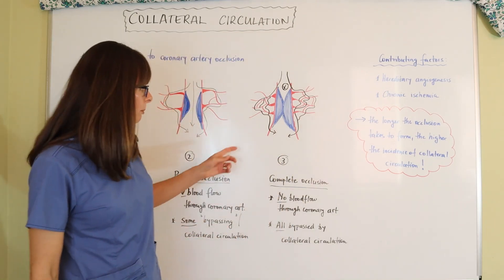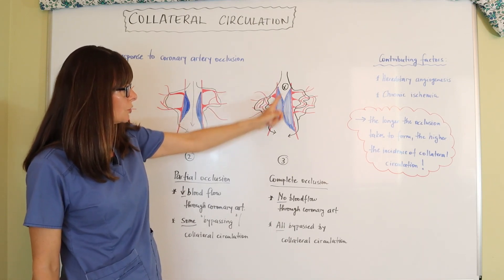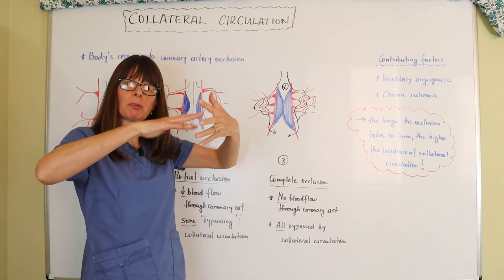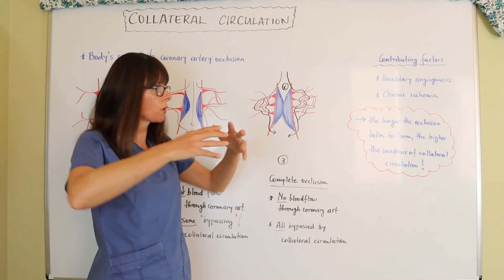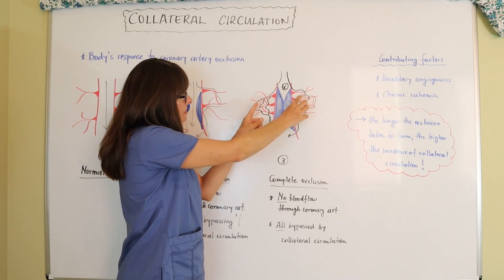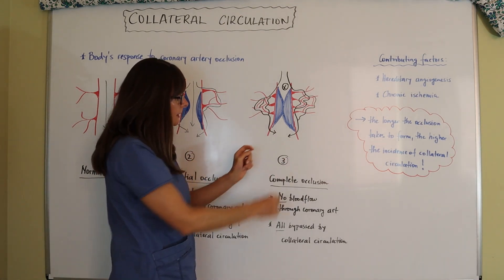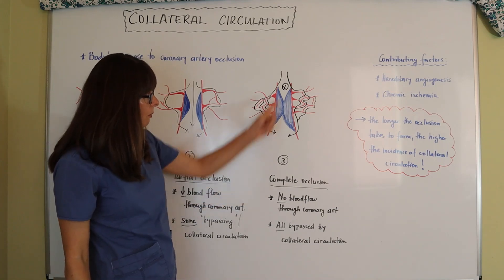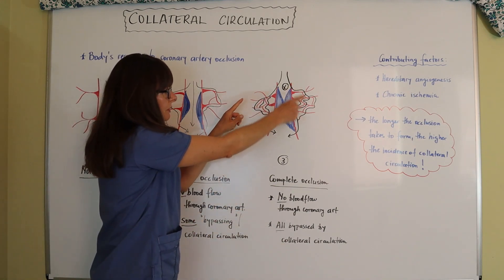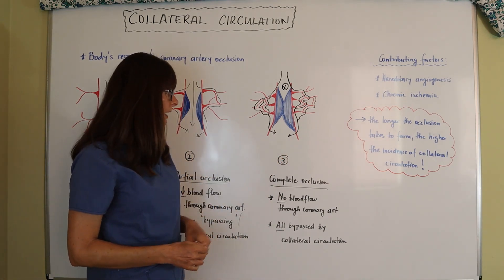When there is a complete obstruction — when this blood vessel is completely clogged with no blood flow through the center — these tentacles, these blood vessels that have grown together, now build an extensive network. The blood flow can come from the top and run through all these side branches to still perfuse the distal part of the heart. In a complete occlusion there is no blood flow through the main artery, but all of it is bypassed by the collateral circulation through multiple different pathways, ensuring blood flow in the distal region.